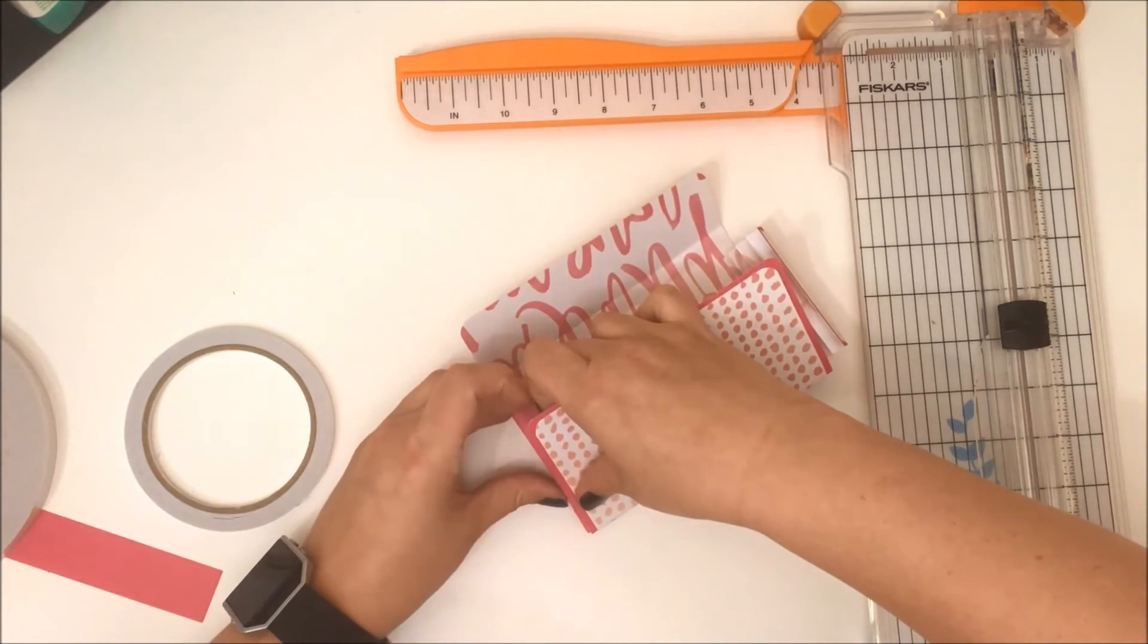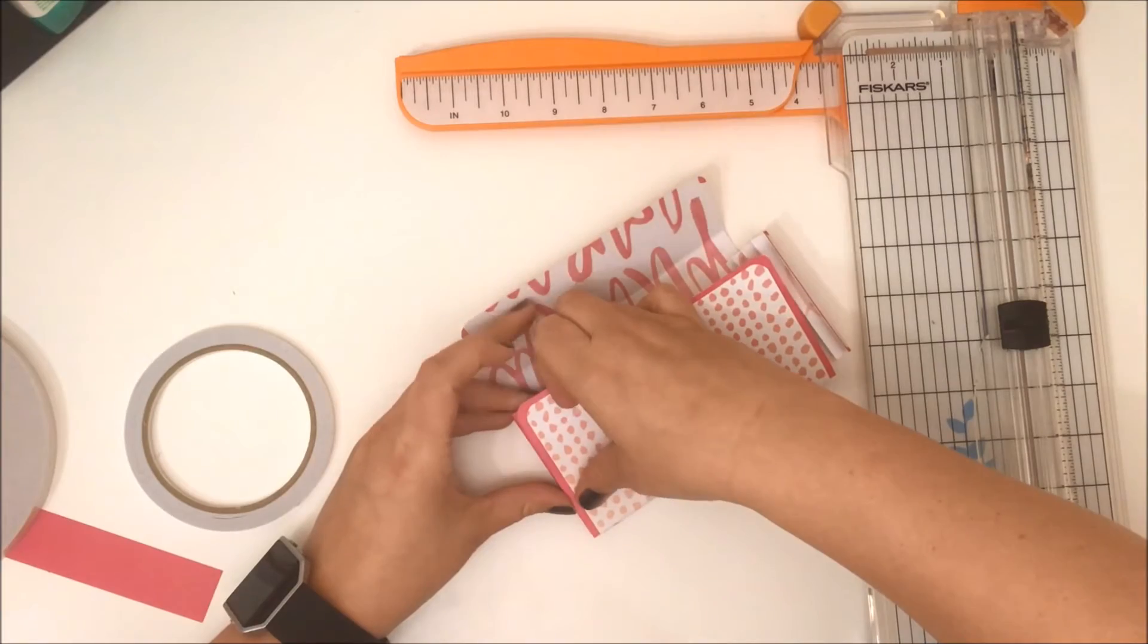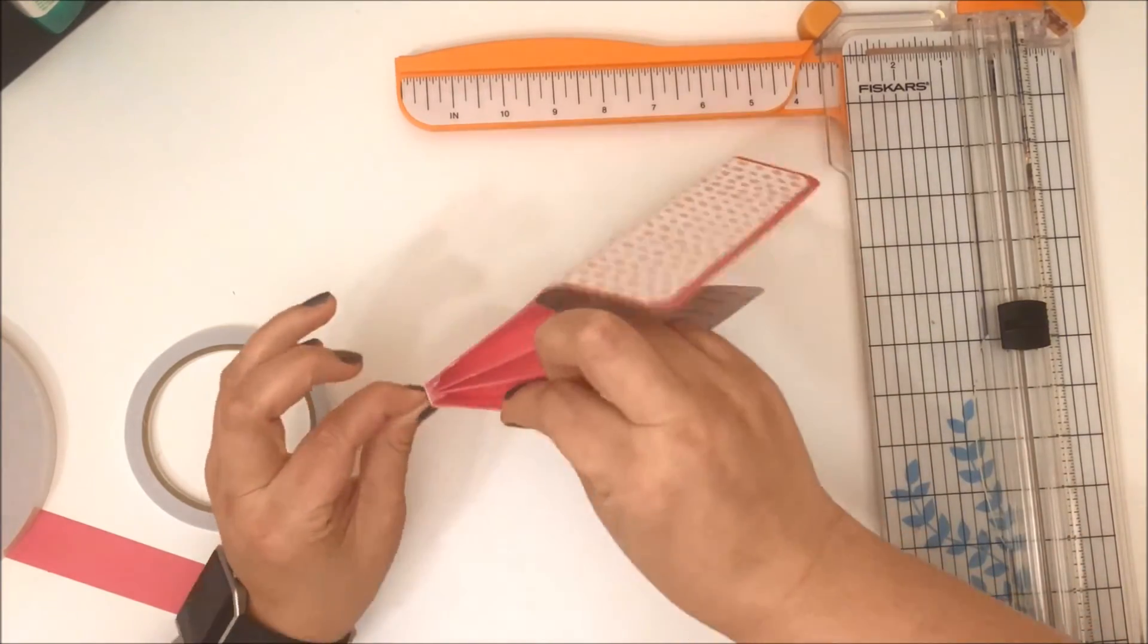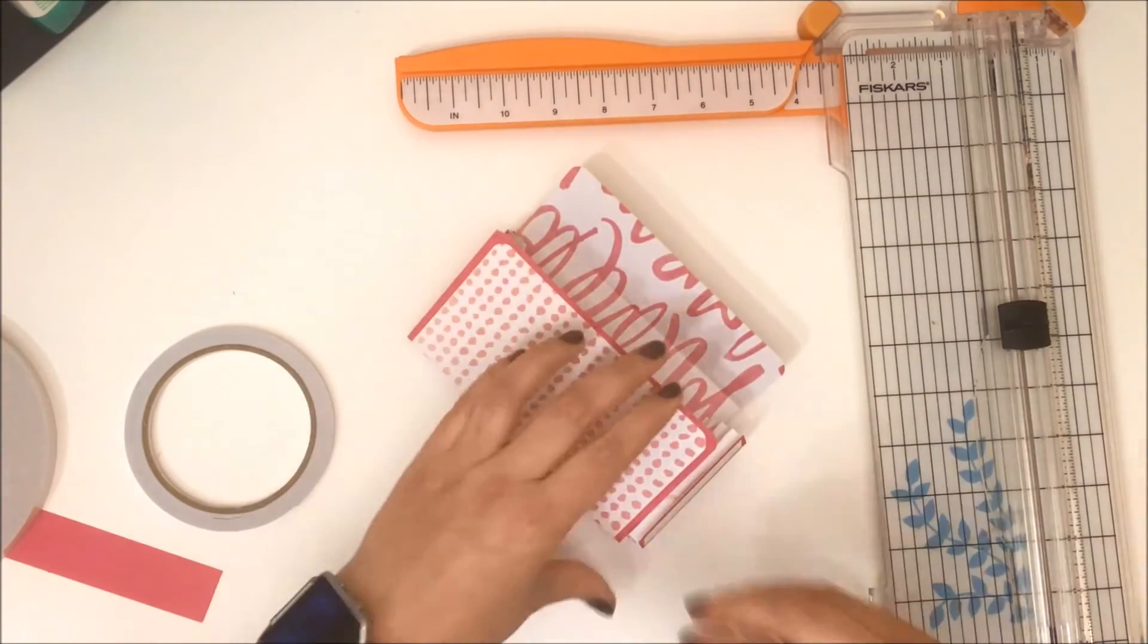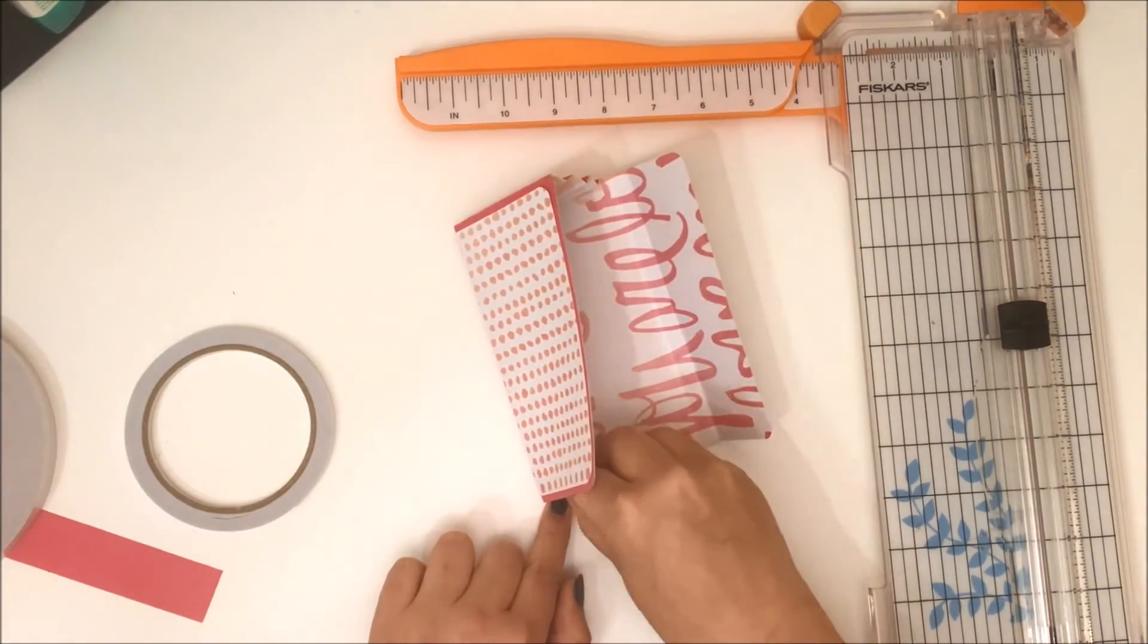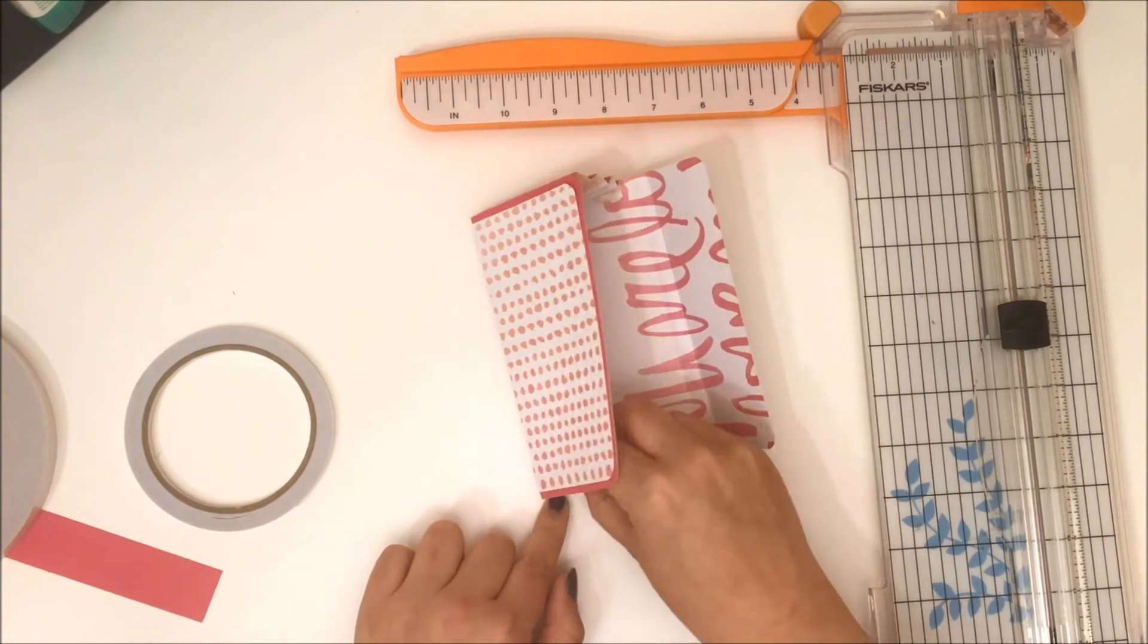As you can see here, I'm just lining it up again with the score line at the bottom and just pressing it down firmly so that it's completely stuck. Then I can do the other side. Because it's concertina, you've got room in there to play.